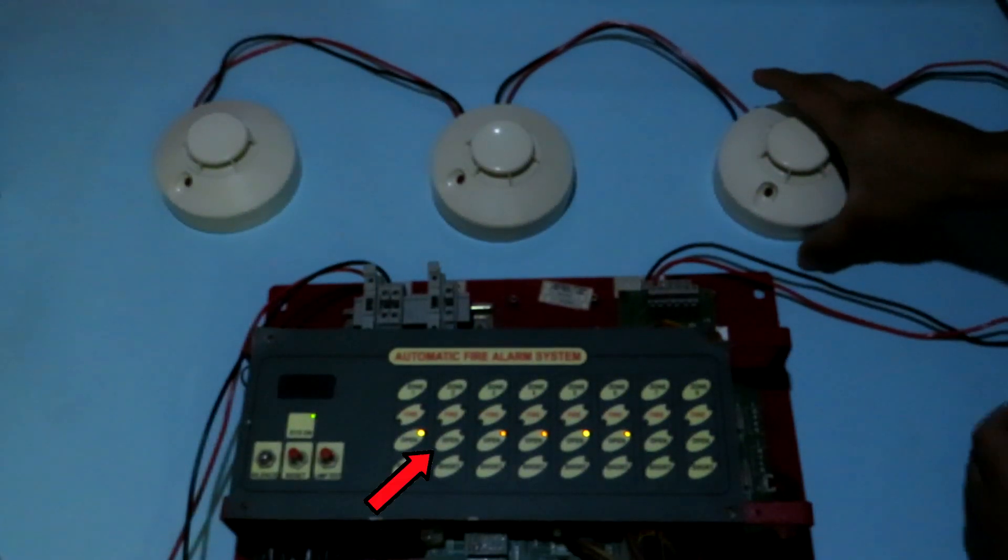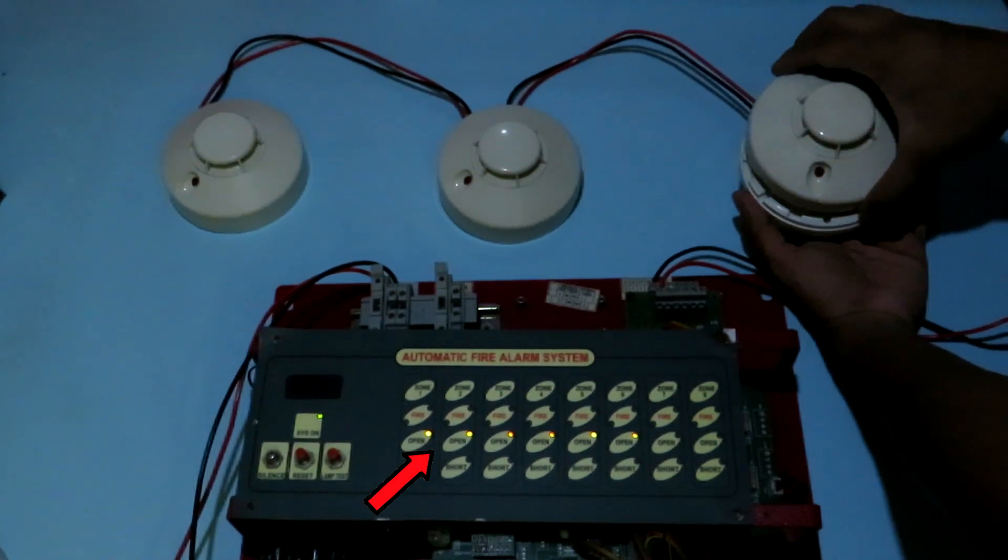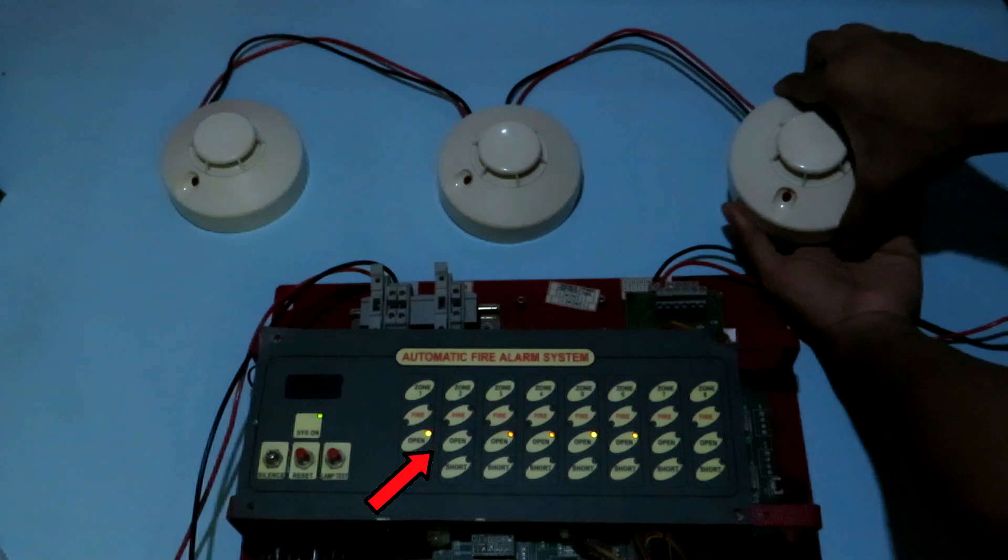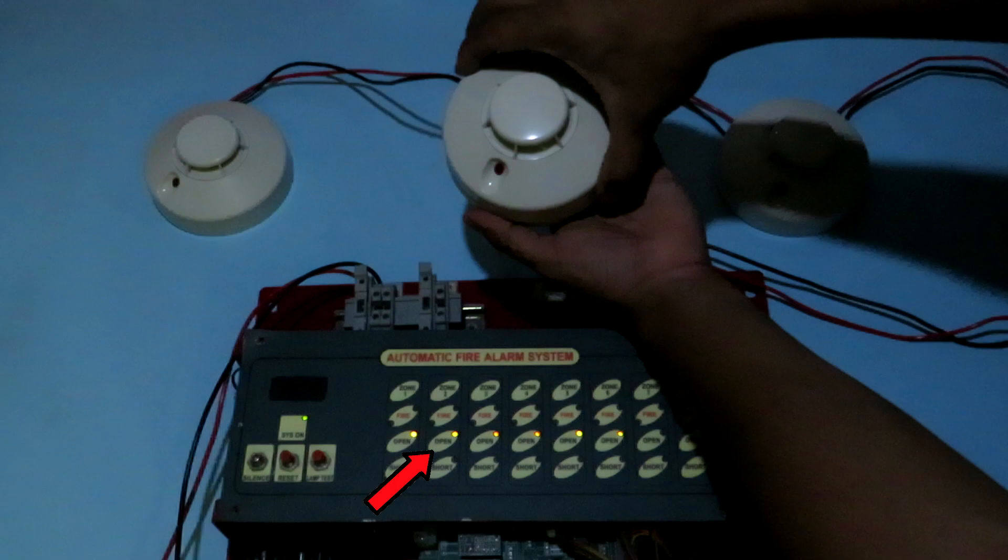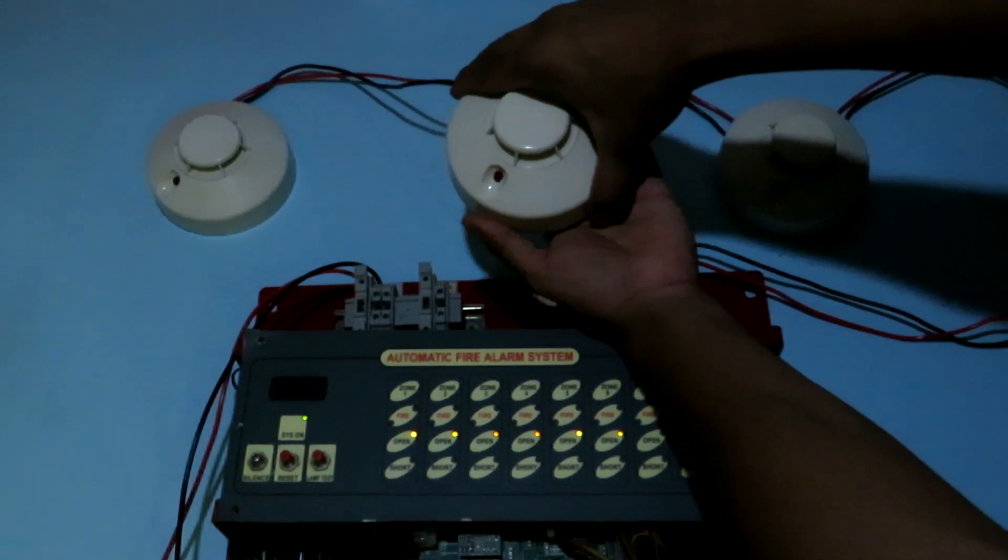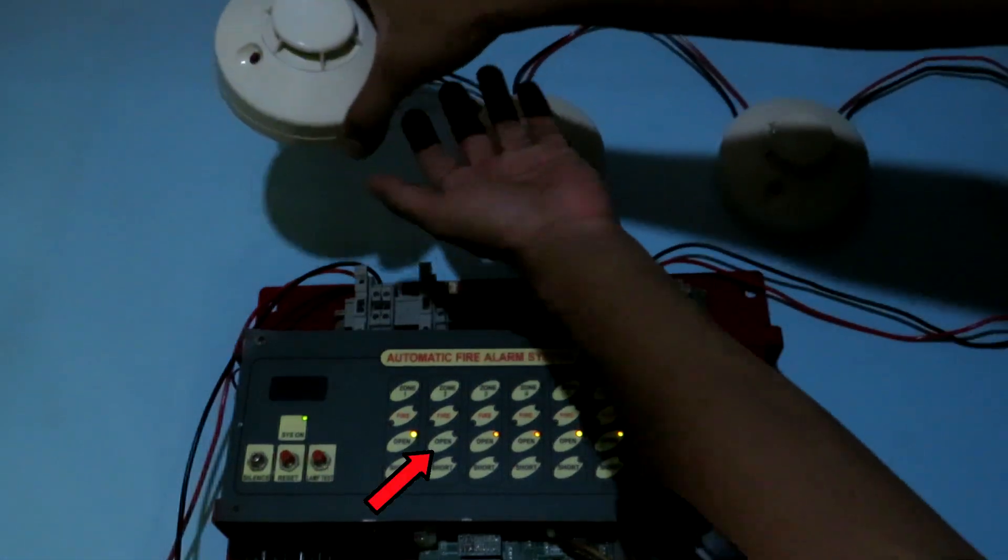The zone loop that we have here is connected to zone number two in this panel. Now you can observe that if we open any detector in the line the open circuit indicator for zone two is switching on. The minute we install back the detector you can see that the open circuit indication at zone two goes off. The open circuit function in the control panel basically tells you that one or more detectors in the line are not connected or that the line is probably damaged or broken at some point due to which all the detectors are not successfully connected to the panel.